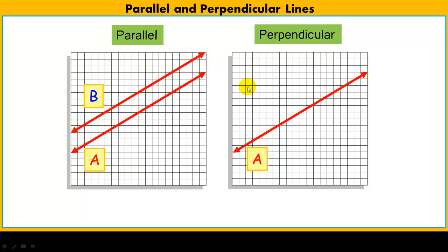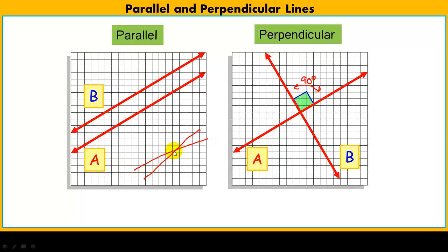Perpendicular lines aren't just lines that cross — they have a very special crossing. That crossing is at an angle of 90 degrees, making a nice right angle. So there are three types of lines: lines that never cross, lines that cross at a perfect 90-degree angle, and all the others — the vast majority — that intersect at some point in two-dimensional space.